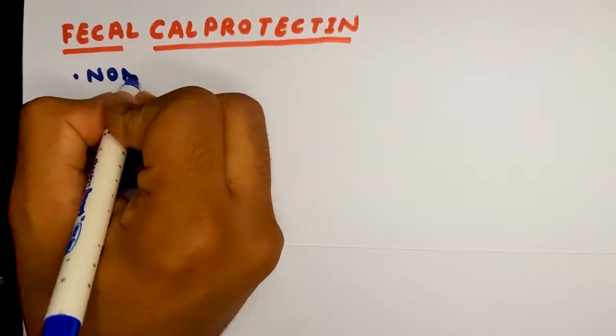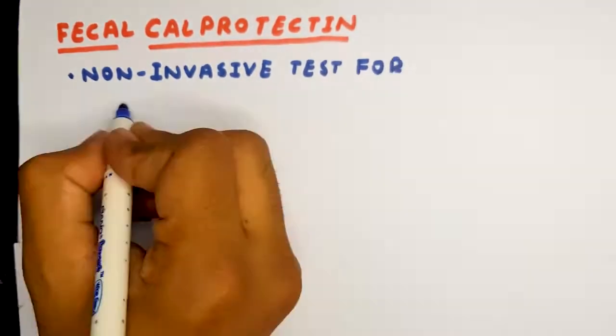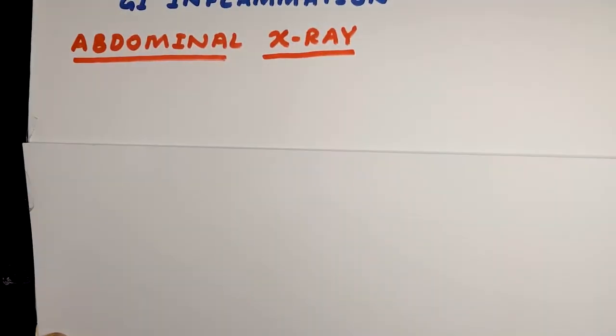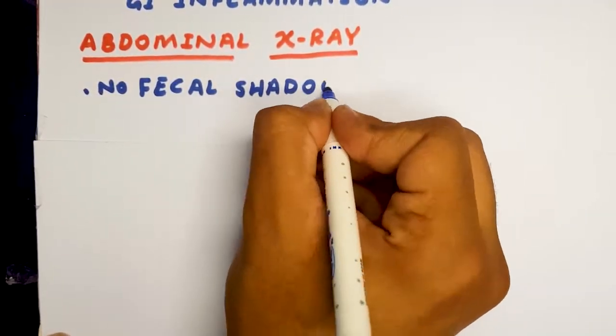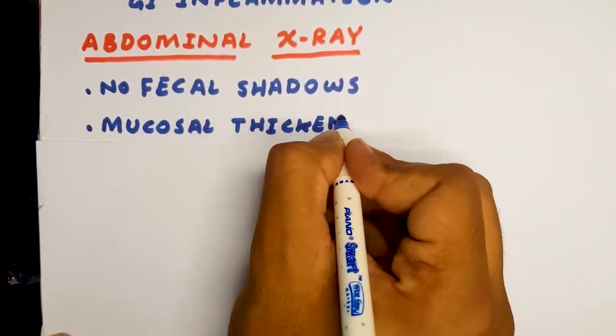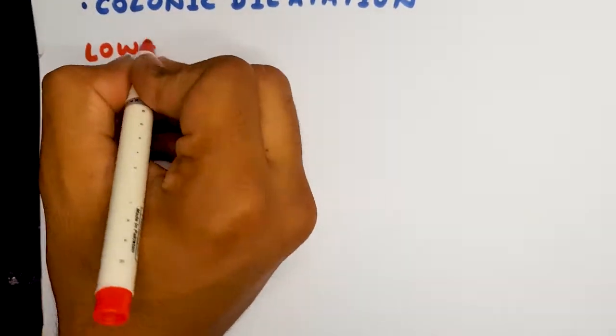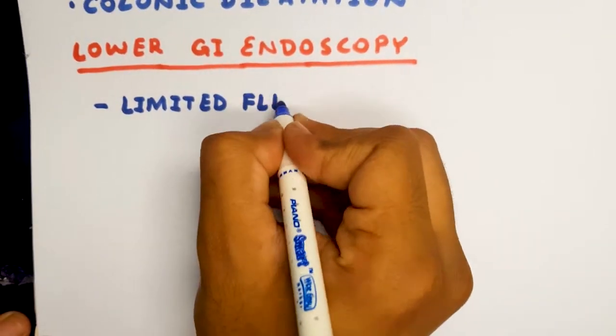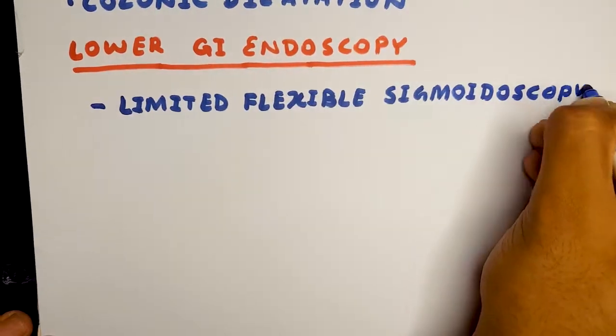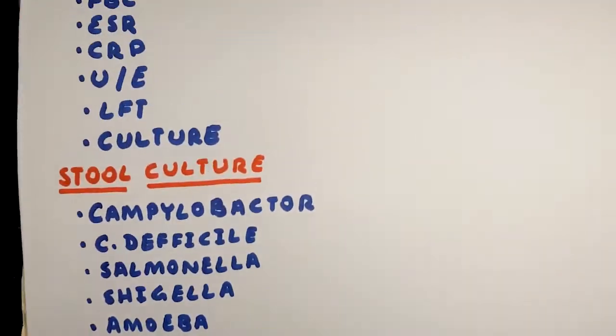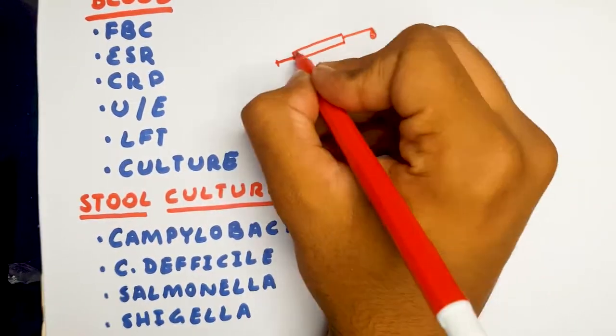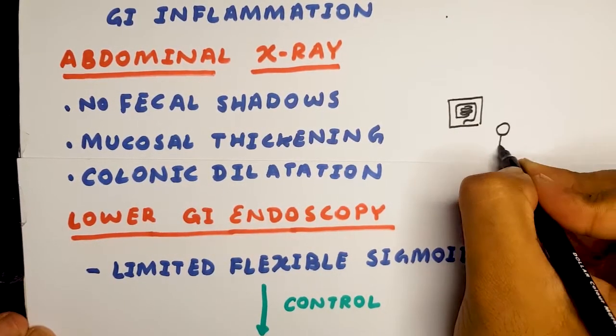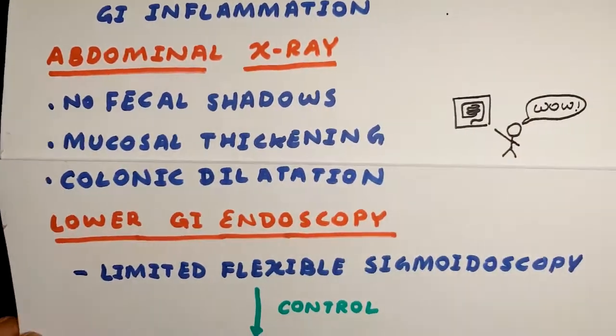There's the fecal calprotectin, which is a non-invasive test that shows GI inflammation. Then we do an abdominal x-ray which will show no fecal shadows, mucosal thickening, and colonic dilatation. We do lower GI endoscopy, in which during an acute attack we do a limited flexible sigmoidoscopy, then control the disease, then move on to a full colonoscopy. An easy way to remember all of this is we check the blood, check the poop, and then try to see the inflammation within the patient.